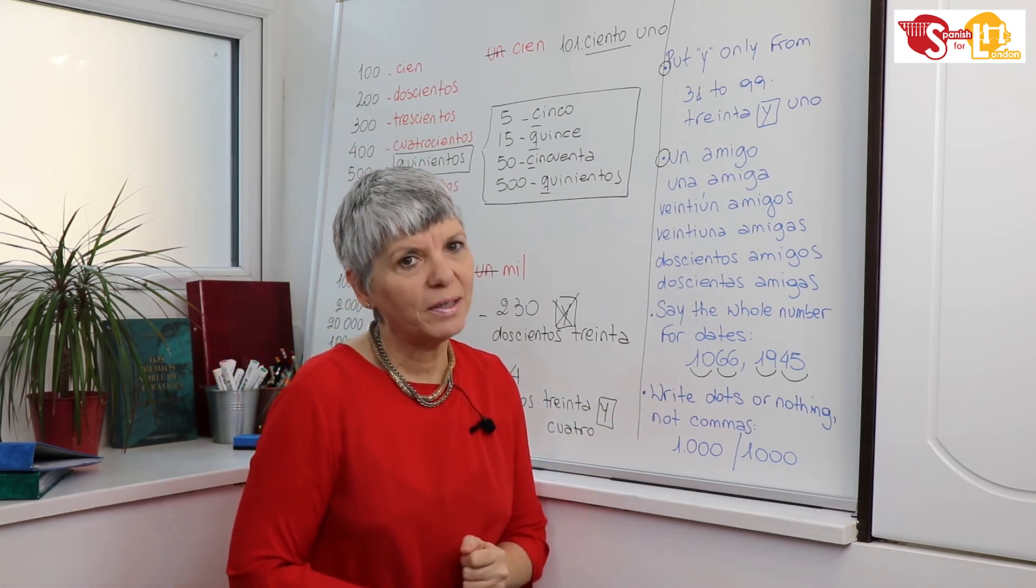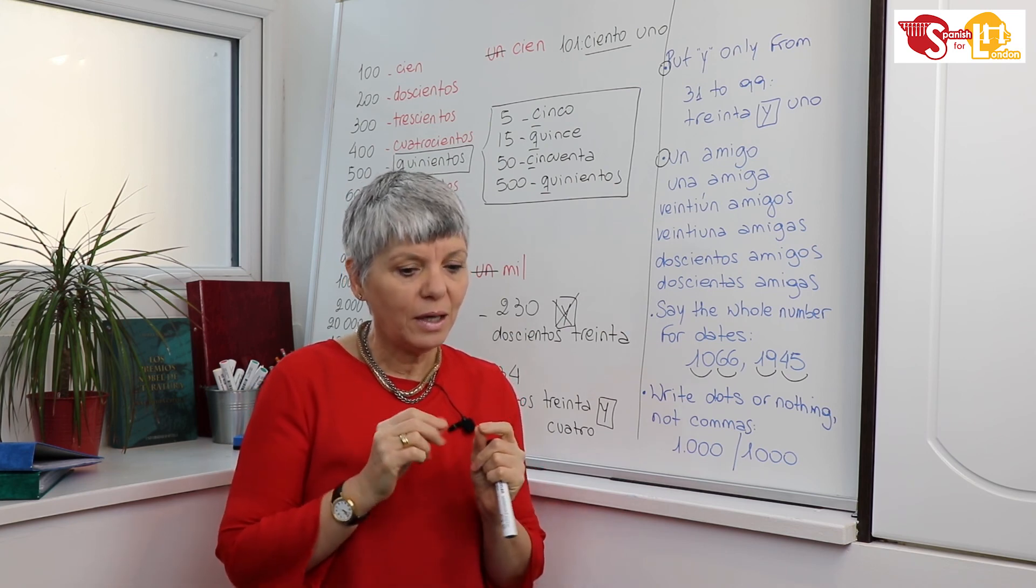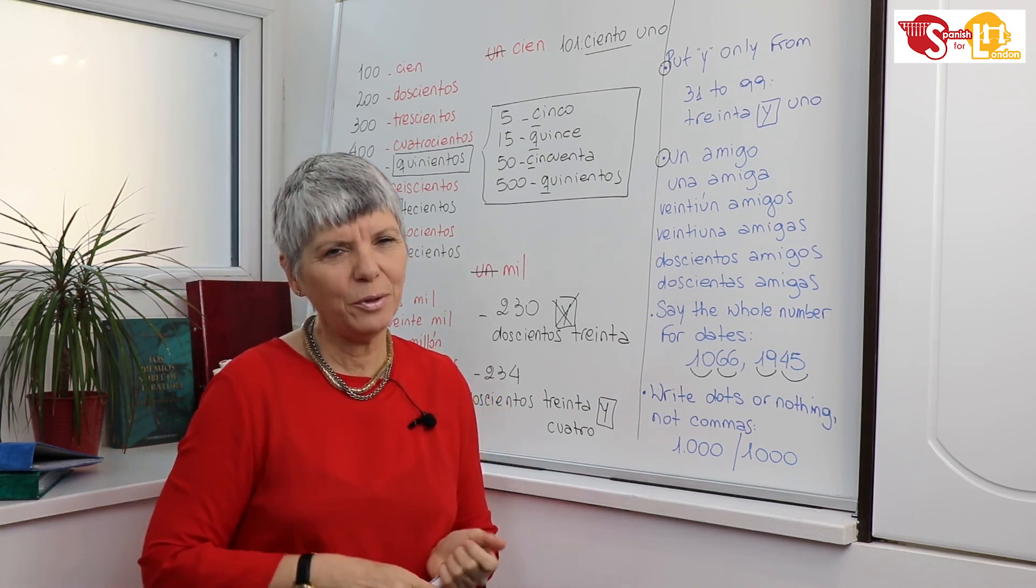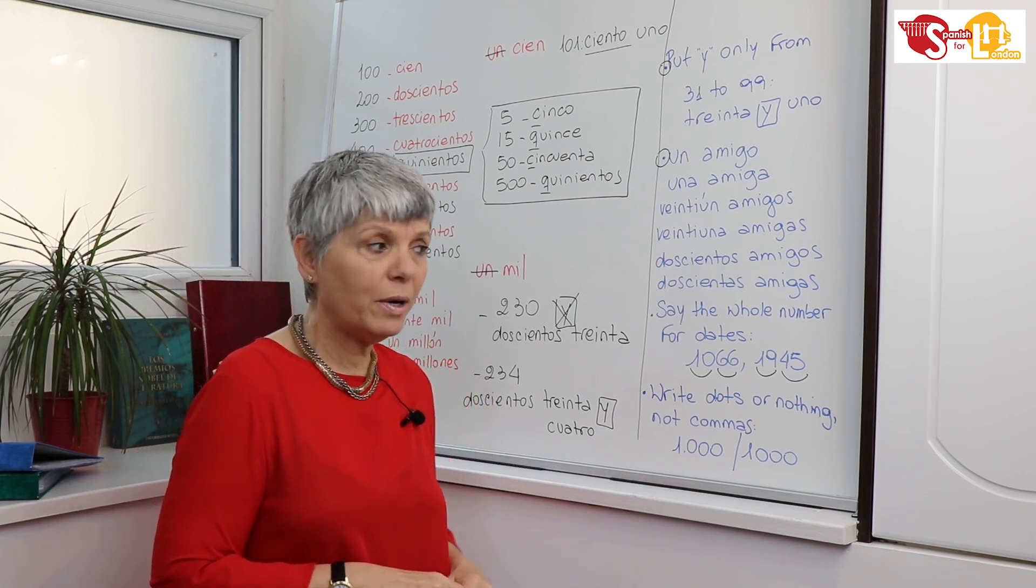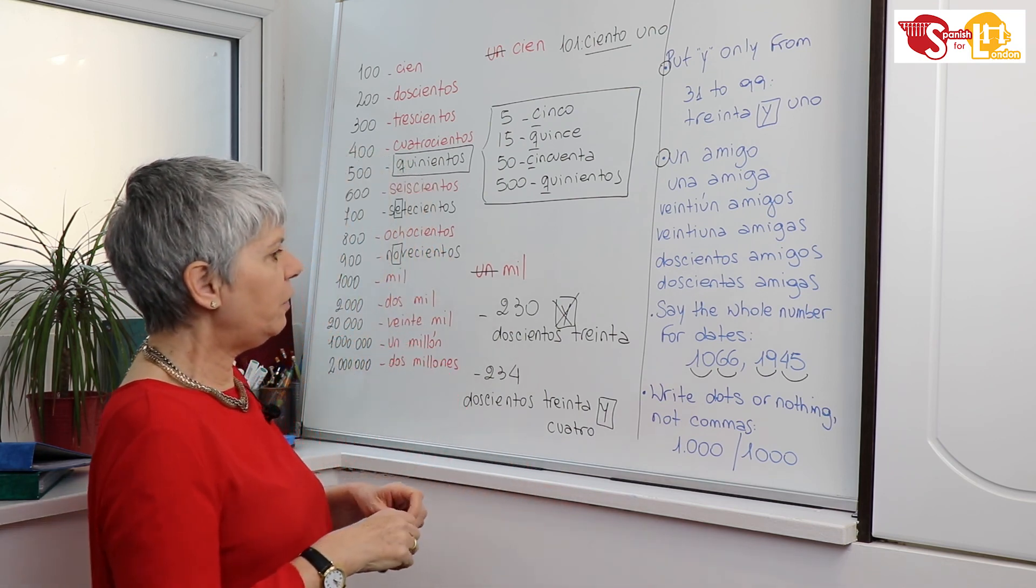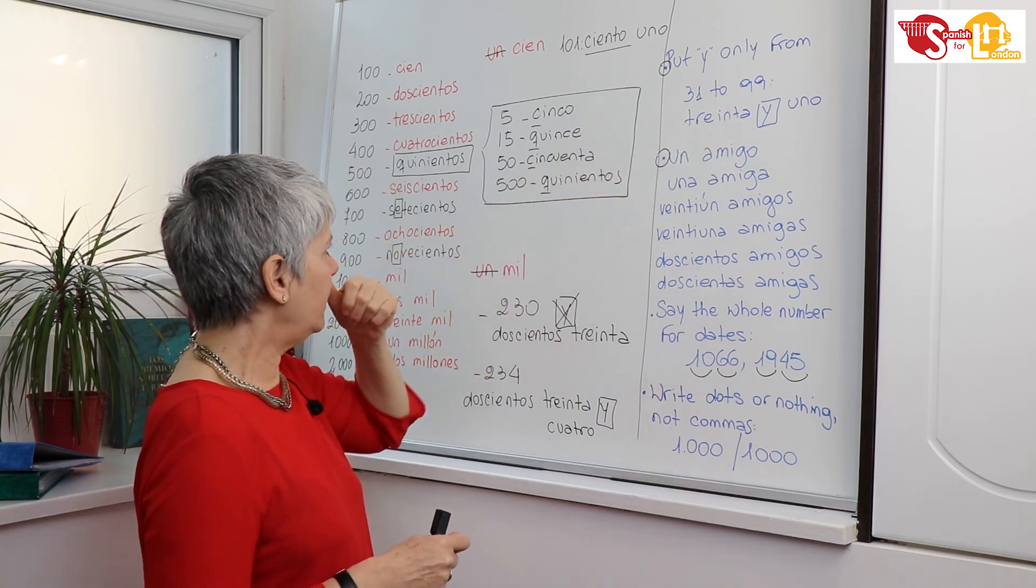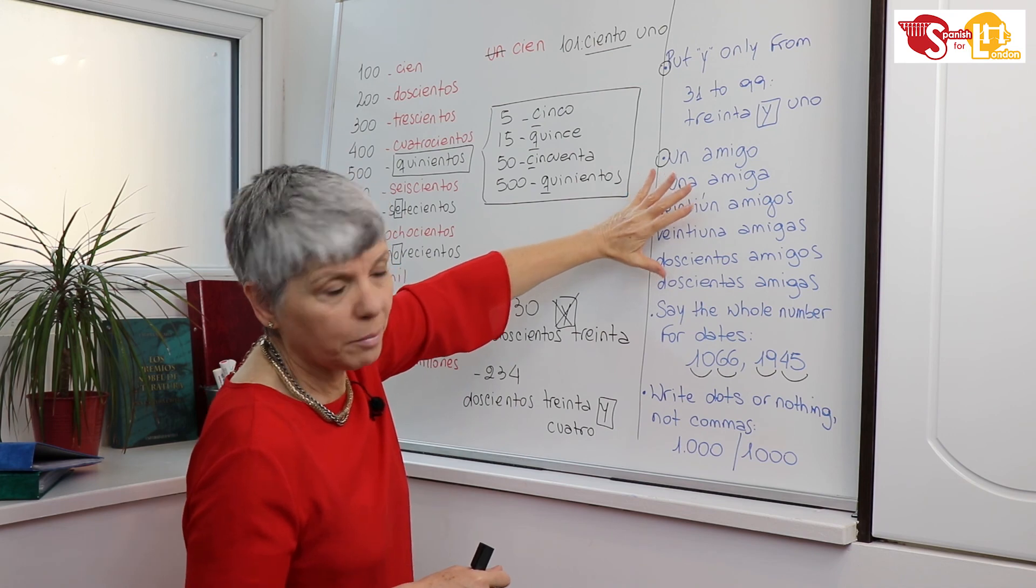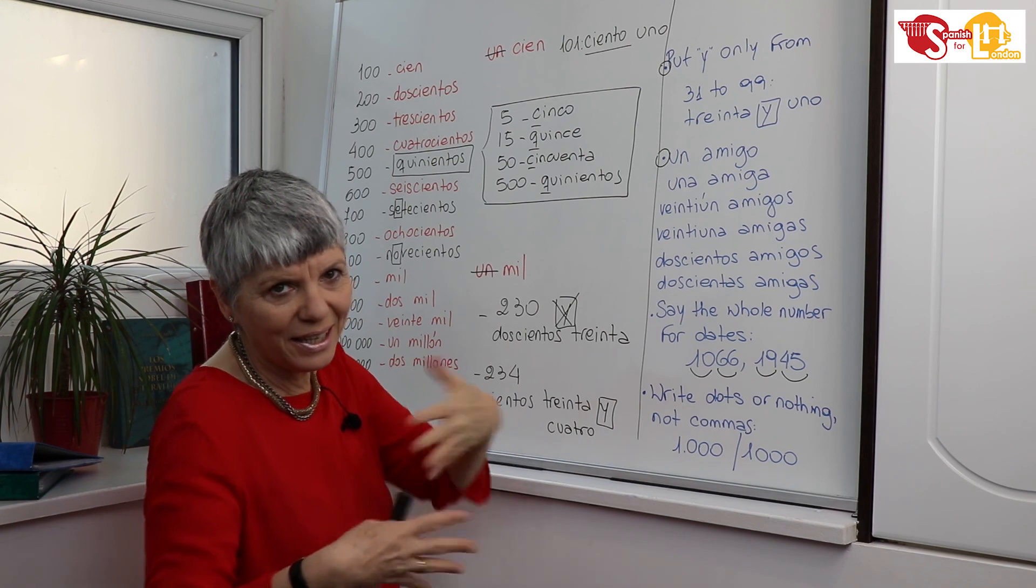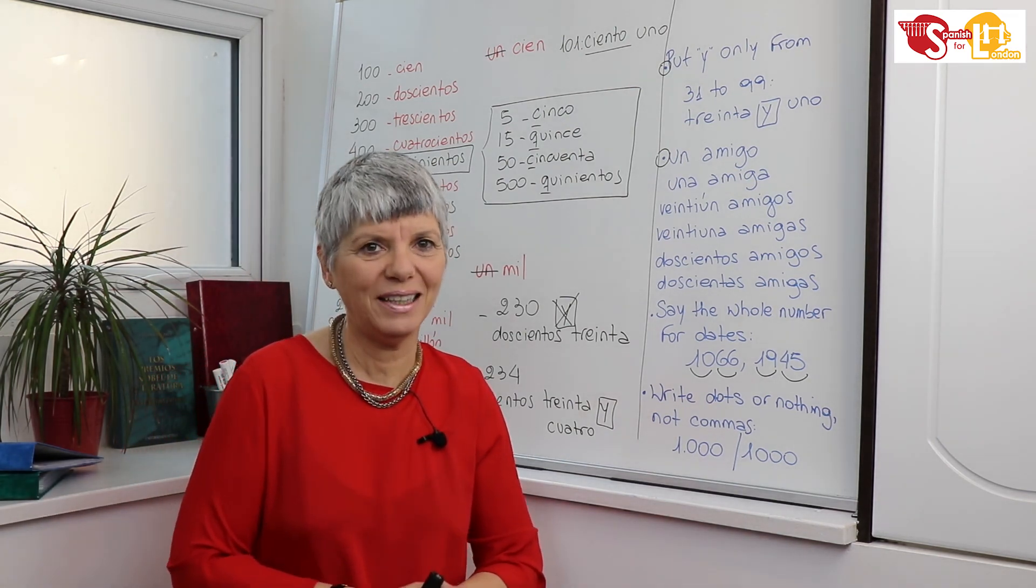Now you know your numbers. Remember to practice your numbers, because they could be, as I told you before, they are irregular, so you have to master them, you have to use them properly. So practice, because then when you use them, you forget frequently when to put the Y, or you forget that you have some feminine and masculine forms, or the irregular cinco, quince, cincuenta, quinientos, etc. So practice and practice. Remember, practice is all. La práctica es todo.